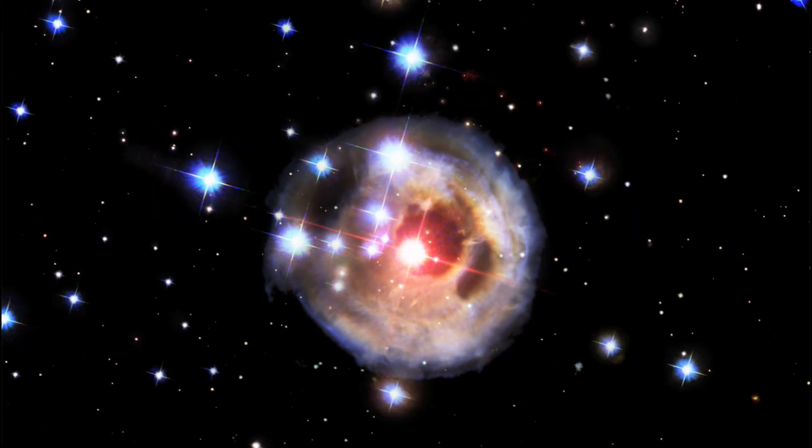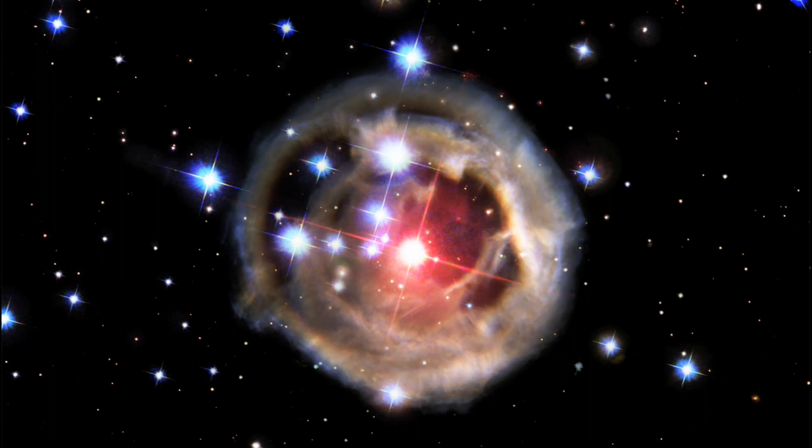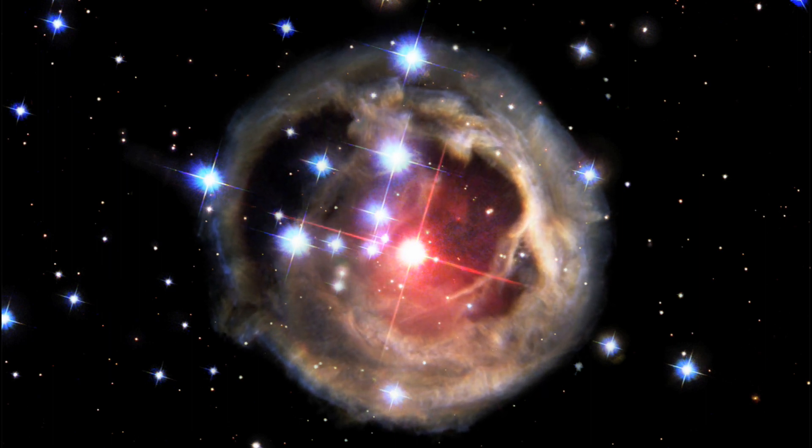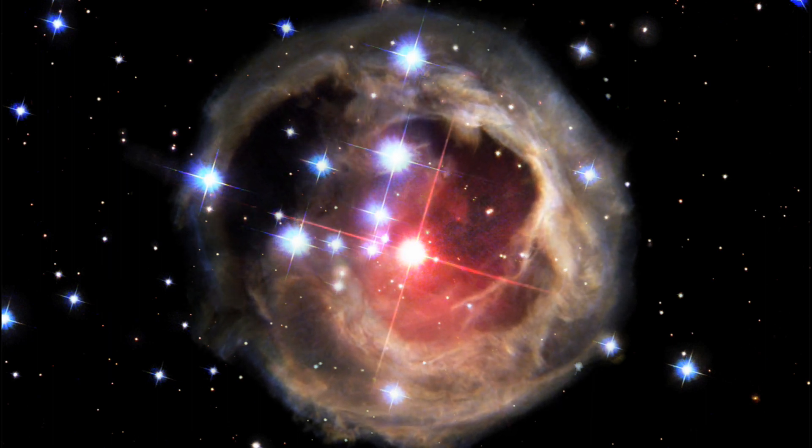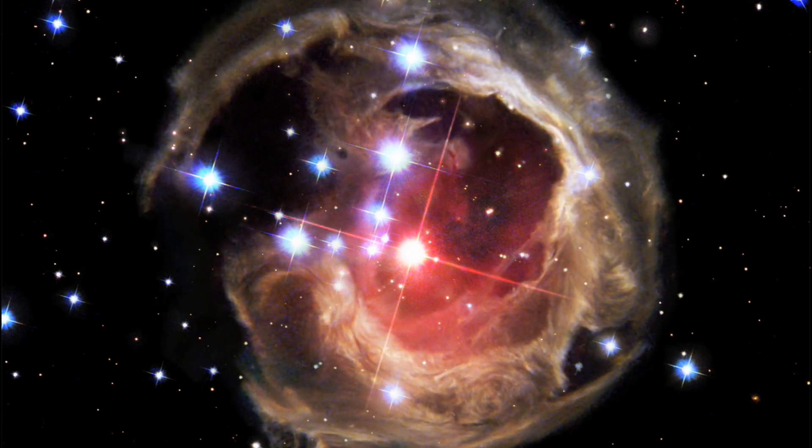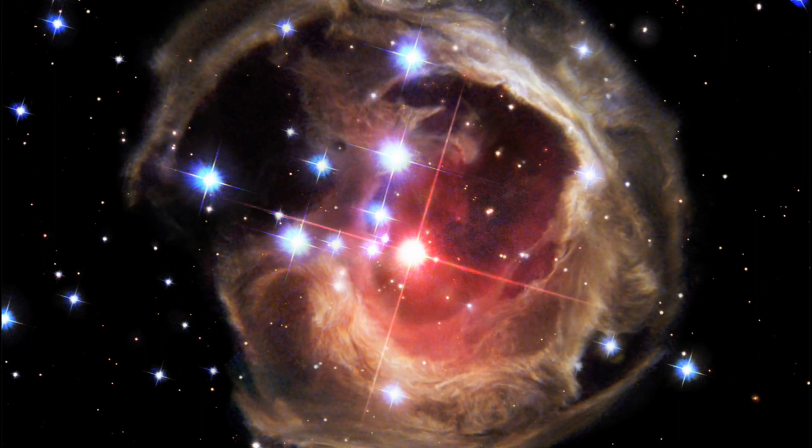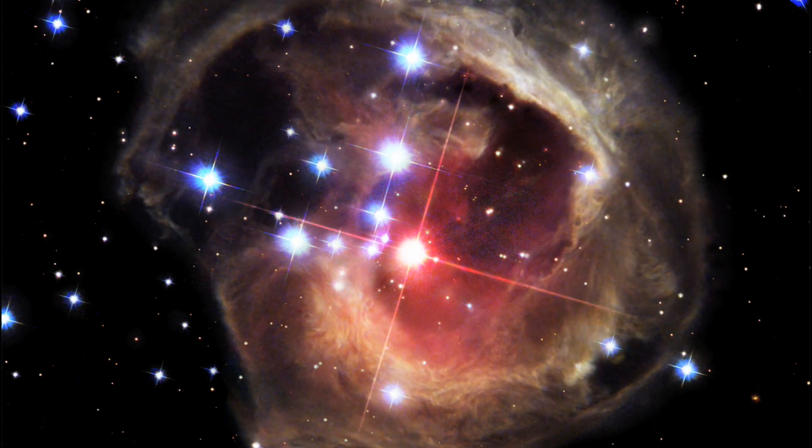Hubble has also imaged a flash of light propagating through the dust surrounding the star V838 Monocerotis. The distances are so huge that this sequence took four years to film, even though it's moving at the speed of light.